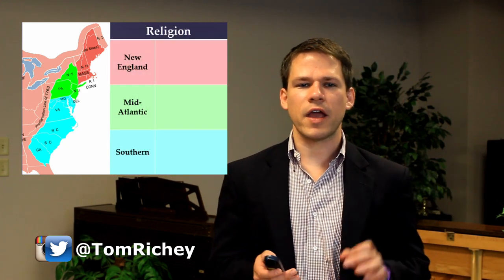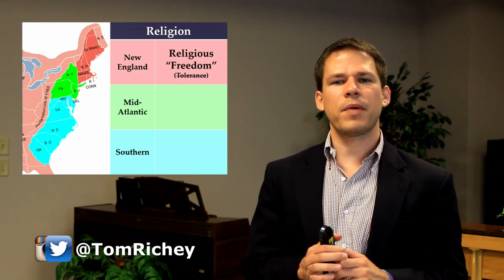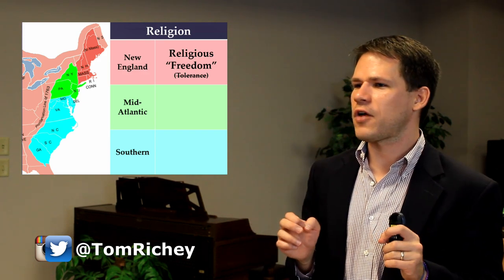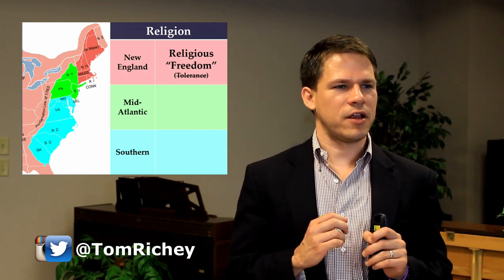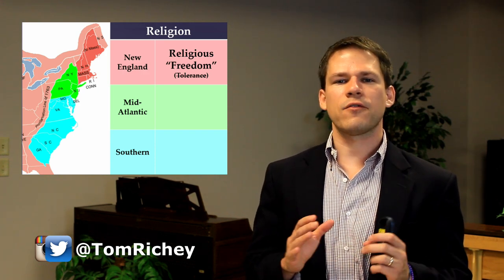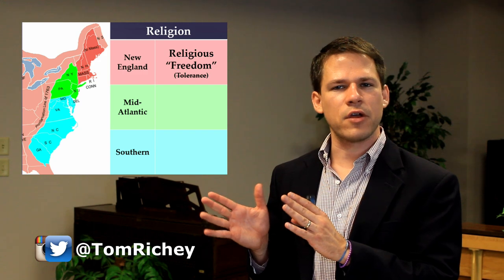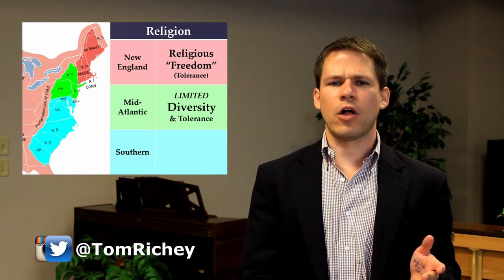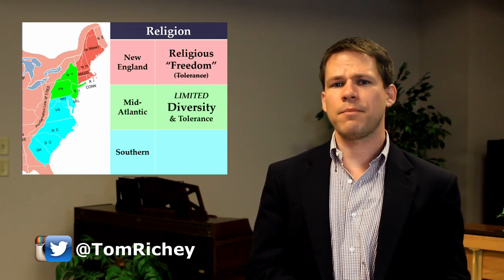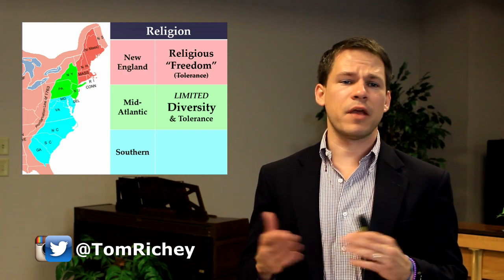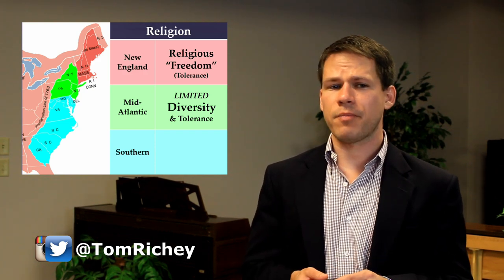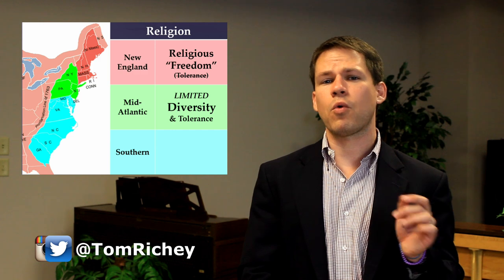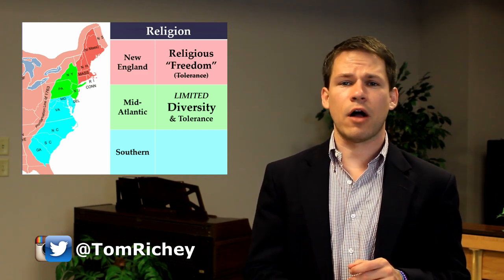Let's take a quick look at religion. In New England, this is where people settled for religious freedom — though keep in mind that religious freedom does not necessarily mean religious toleration in the way we think of it today. These were Puritans and Separatists coming from England to build their city on a hill. In the mid-Atlantic colonies, you have a limited amount of diversity. Maryland was for Catholics, Pennsylvania was founded by Quakers and open to everybody, and in places like New York and New Jersey you have established churches. There is more diversity and tolerance in the middle colonies than anywhere else.